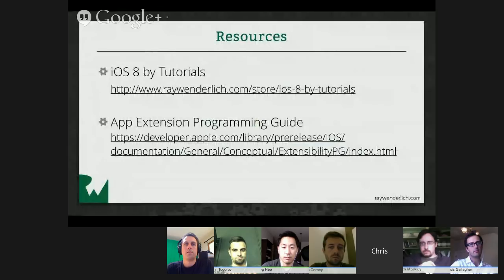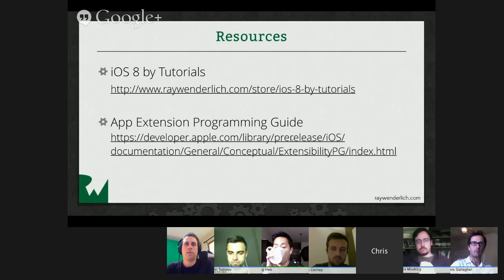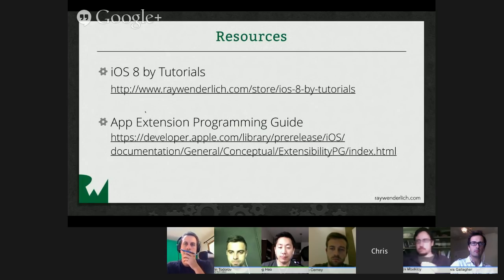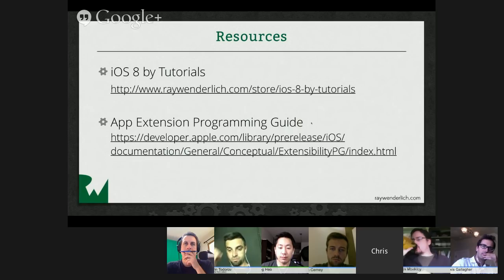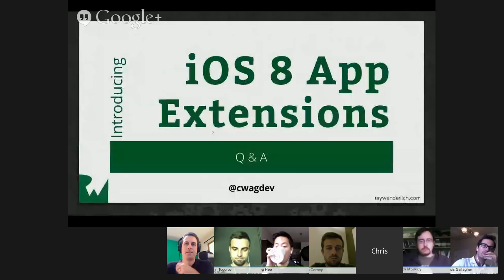For resources: our book has all six extension types implemented with step-by-step tutorials. I also highly recommend going through Apple's App Extension Programming Guide — the URL may change since it's still pre-release, but you can Google "app extension programming guide" and it should come up. That's all for the presentation — let's go to Q&A.